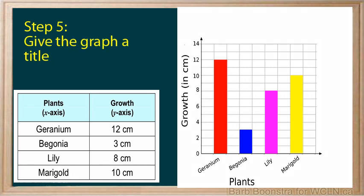The last step is to title the graph. Create a title that explains what the data represents. In this case, it is the growth of plants in three weeks.